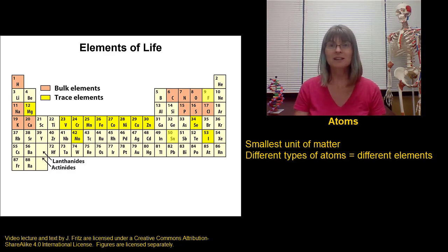The four elements that we need in the largest amounts in living things are carbon, hydrogen, oxygen, and nitrogen. These elements make up the bulk of living things.